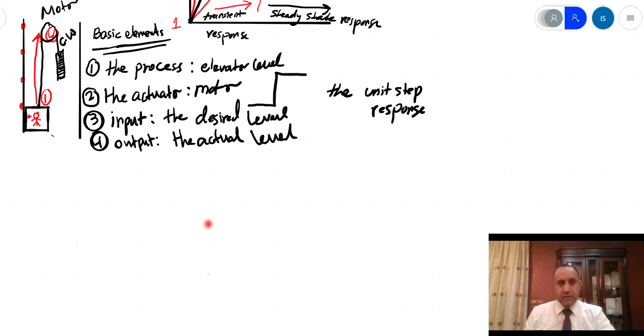From this example, we can observe that we have two major measures of performance. The first one is related to the transient response.